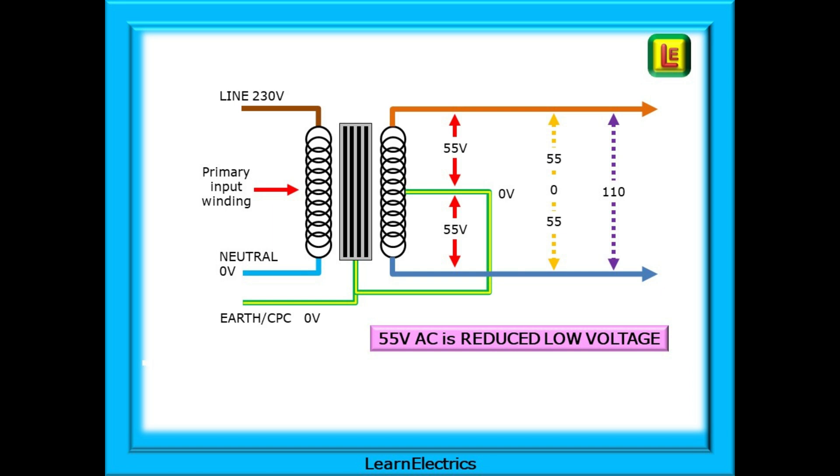55 volts with reference to the earth, but 55 plus 55 or 110 volts for the tools. 55 volts AC is still in the low voltage range. It is not extra low voltage, but it is very close to the 50 volt limit and so we call this reduced low voltage.